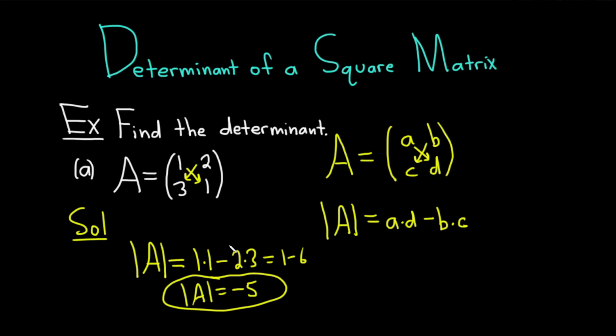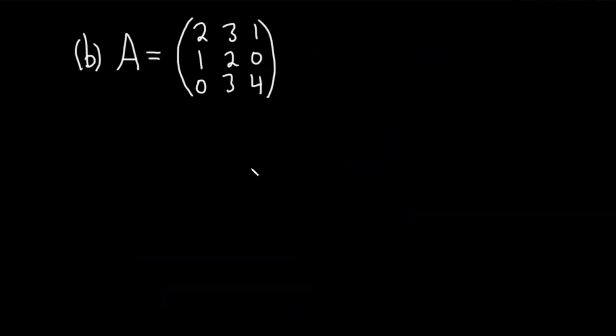Let's go ahead and do an example of the determinant of a larger matrix. So here we have a 3 by 3 matrix. A is equal to the matrix with entries 2, 3, 1, 1, 2, 0, and 0, 3, 4. And we're going to find its determinant solution.